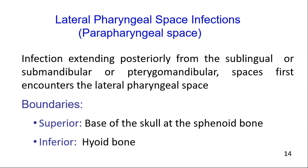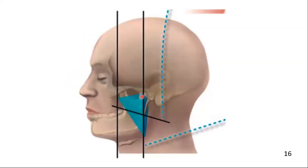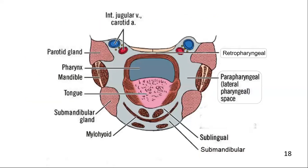Let's explain the boundaries of the lateral pharyngeal space. This space, with an inverted triangle shape, extends from the base of the skull — that is, the sphenoid bone — superiorly, to the level of the hyoid bone inferiorly. This space is bordered laterally by the medial pterygoid muscle, and medially by the superior pharyngeal constrictor muscle. Posteromedially, it is continuous with the retropharyngeal space.